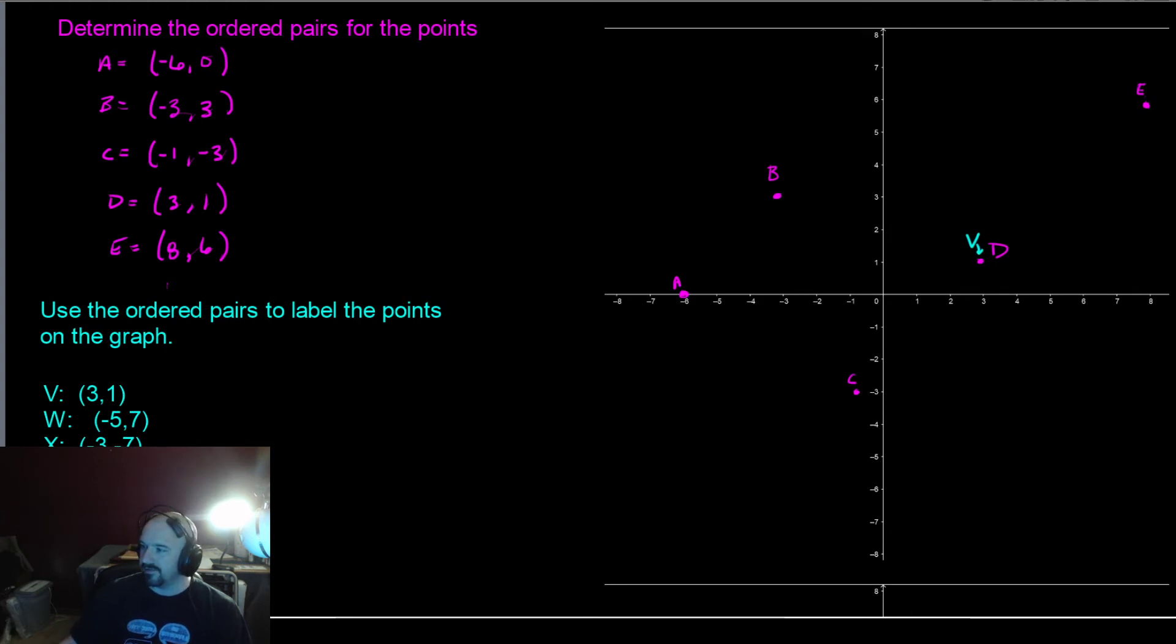W, negative 5. So we go over 1, 2, 3, 4, 5, negative on the X, and then up 7. So 5, 7.